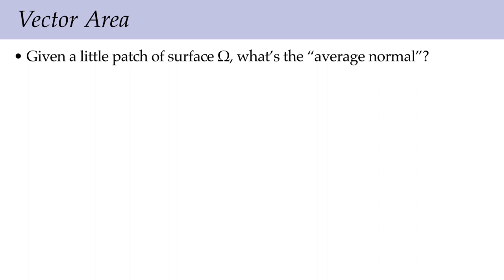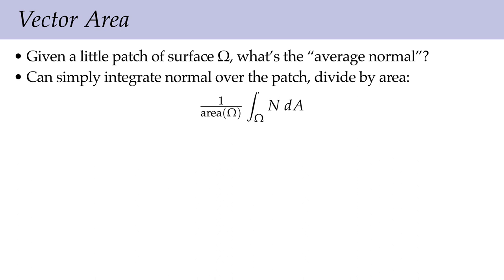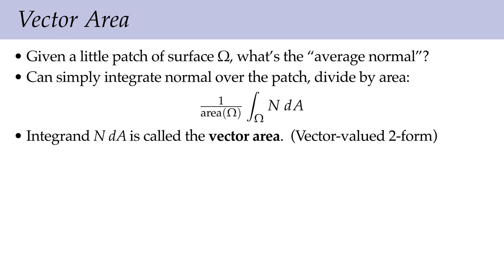Another interesting quantity in the differential geometry of surfaces — not a familiar everyday quantity — is the vector area, which you may have seen in physics when studying flux through surfaces. The motivating question: if I have a little patch of surface floating in space, what's a vector I can associate with that patch that roughly tells me the normal direction at all the points? One way is to integrate the normal over the patch and divide by its area: integrate n dA over omega, then divide by the area. The integrand n dA is called the vector area — dA alone is the area form, so multiplying by the Gauss map or unit normal n gives the vector area.